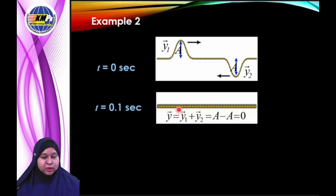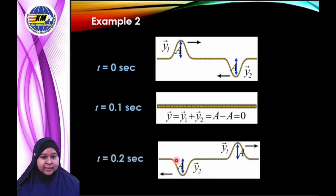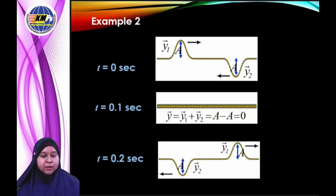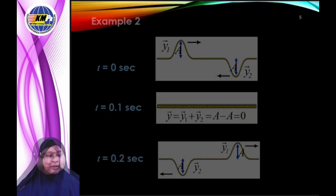The waves add to give a small amplitude — this shows destructive interference. At 0.2 seconds the two waves move separately: the trough moves to the left and the crest moves to the right. These two examples show what happens when two waves meet, and according to the principle of superposition, the amplitude of the resultant wave equals the vector sum of the displacements of the two individual waves before and after they mix.